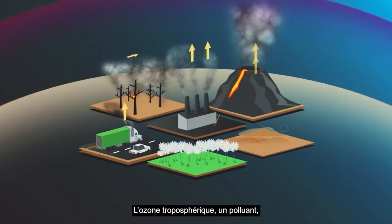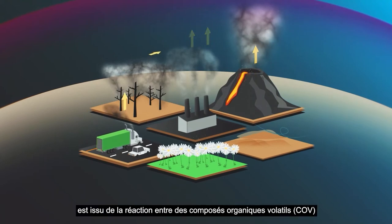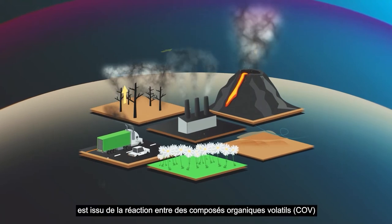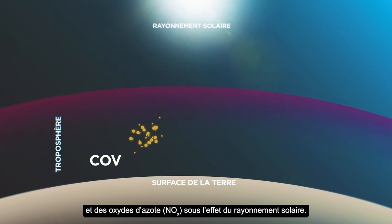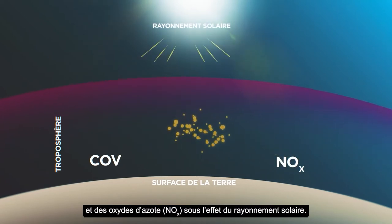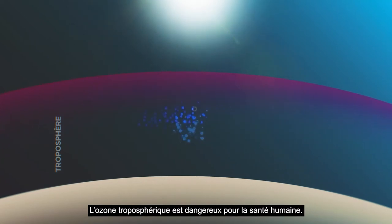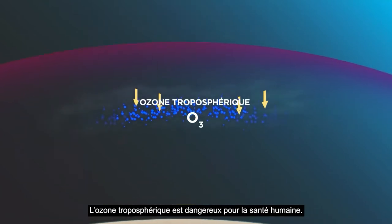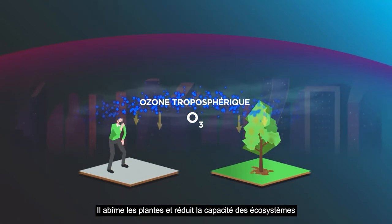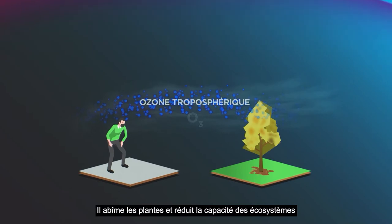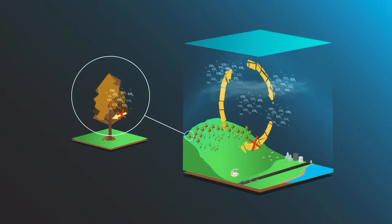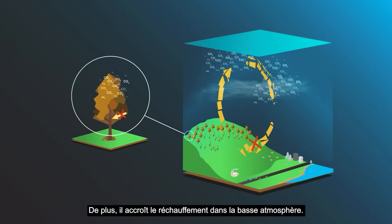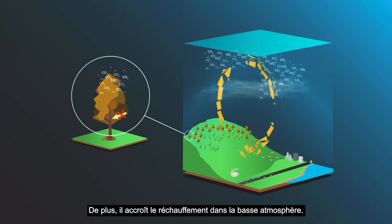Tropospheric ozone, a pollutant, forms when volatile organic compounds and nitrogen oxides react with each other in sunlight. Tropospheric ozone is harmful to human health, damages plants and reduces the capacity of ecosystems to absorb carbon dioxide. It also leads to additional heating of the lower atmosphere.